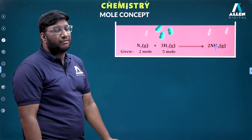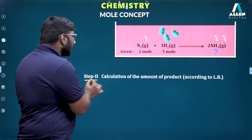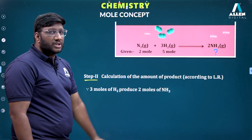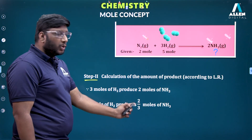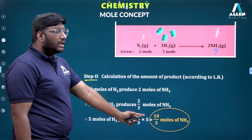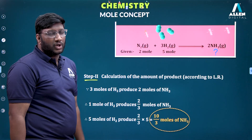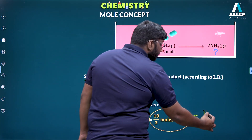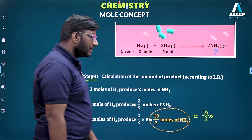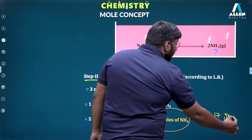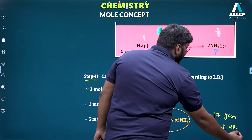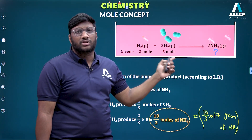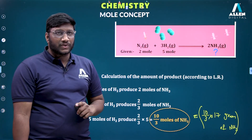Step 2 — calculation of the amount of product according to the limiting reagent: 3 mol of H2 produces 2 mol of ammonia; 1 mol of H2 produces 2/3 mol of ammonia; so 5 mol produces 5 × 2/3 = 10/3 mol of ammonia. We can also express this in grams: 10/3 mol × 17 g/mol = 10/3 × 17 grams of ammonia. This is the weight of ammonia formed when 2 mol of N2 and 5 mol of H2 react.